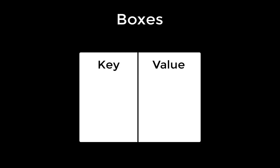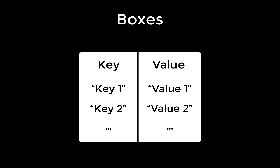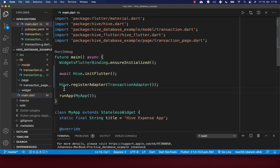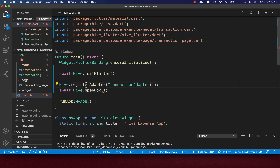Let's have a look at boxes. Boxes are the place where data is stored in Hive as key-value pairs — you can think of a box as a map with a key and a value. A box doesn't have any schema, so you can place any objects as values, even of different types. For each box, a different file is created locally on your storage. Before using a box, you need to open it — go to your main file and open your box of the transaction type right after registering the adapter, giving it a name like 'transactions'.